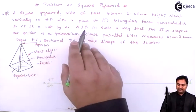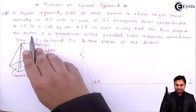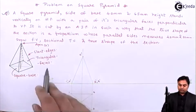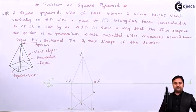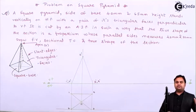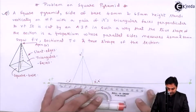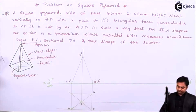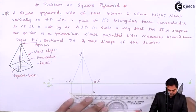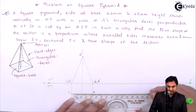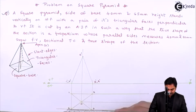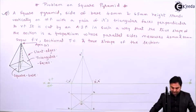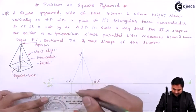It is cut by an AIP (auxiliary inclined plane) such that the true shape of the section is a trapezium whose parallel sides measure 40 mm and 20 mm. We need to draw the front view, sectional top view, and true shape. Since the true shape is given, we use it to locate the cutting plane. First, through the apex I will draw a light horizontal line. The trapezium has a 40 mm parallel side and a 20 mm parallel side, both parallel to each other. Since we already have the 40 mm side, I'll mark and dimension it.